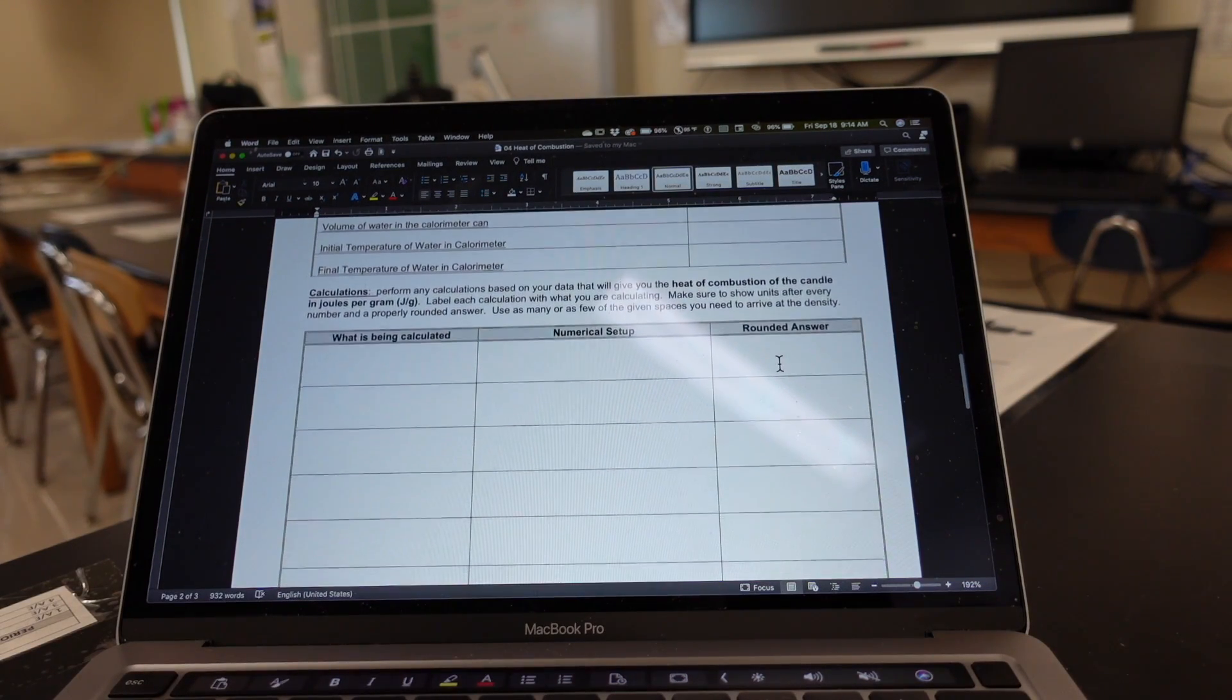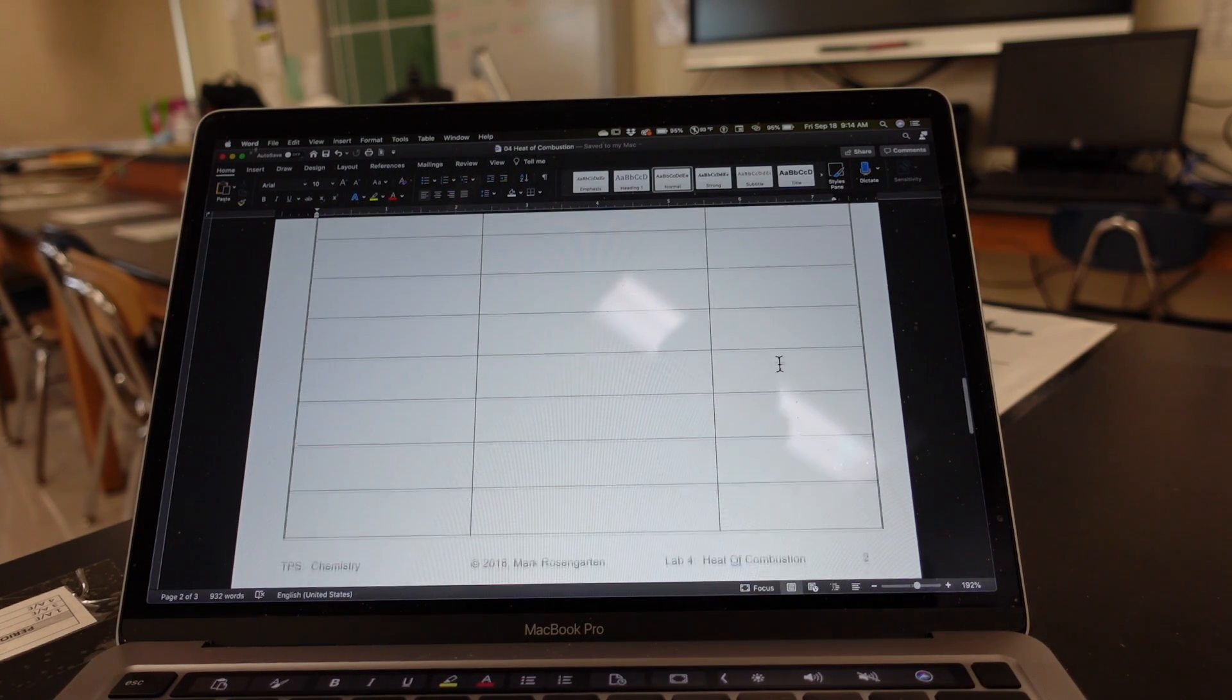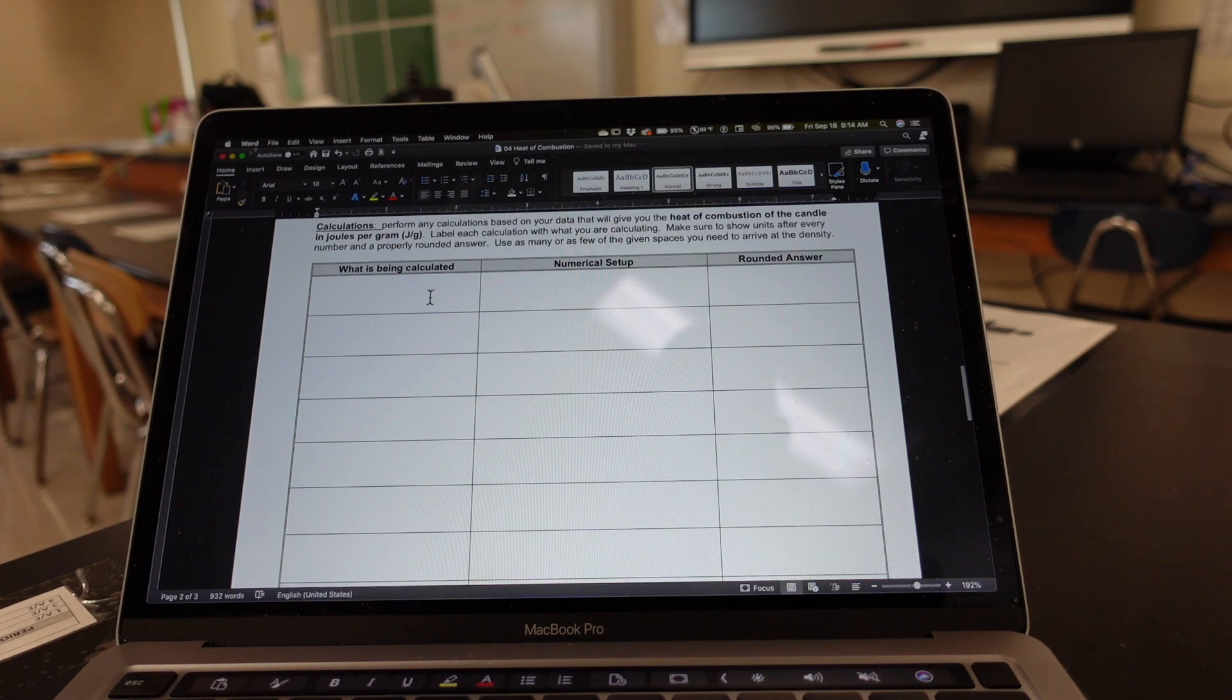Now you're going to have to put down some calculations that will result in you having the heat of combustion of the candle in joules per gram. So you're going to need to make sure that you're calculating joules, and joules per gram means joules divided by grams. Let that help you in your calculation. Now I provide you with far more spaces than you may need. So what exactly is it you're calculating? Show a correct numerical setup with proper units and show a properly rounded answer.